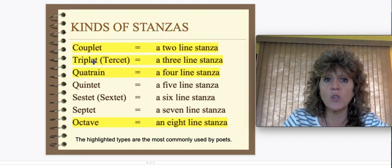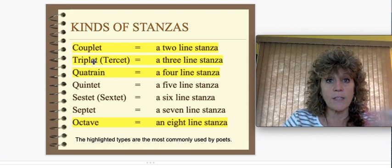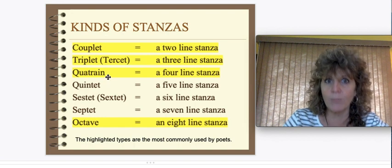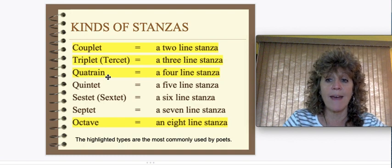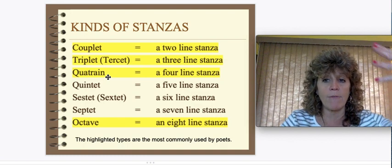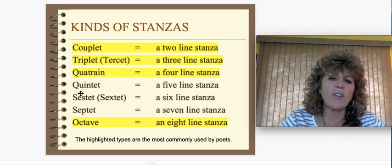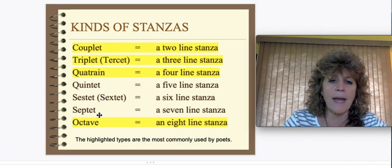There's also what's called a triplet, where the stanzas are organized in three lines all the way down the poem. A quatrain — some of these should look familiar from our word study — has four lines, so the poem is arranged with every four lines considered a stanza. There are other kinds of line groupings too, like the quintet and on and on.